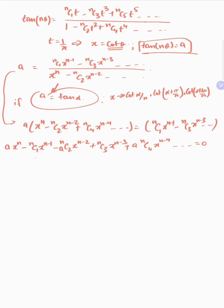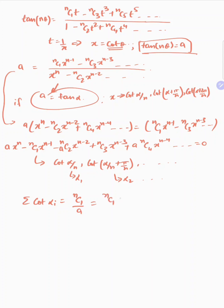Now, from the theory of equations, if this equation has roots cot(α/n), cot(α/n + π/n), and so on — calling them α₁, α₂, etc. — then sigma cot(αᵢ), the sum of all roots, equals minus b/a, which gives minus of (minus nC1) over A, that is nC1/tan α, or nC1·cot α. So sigma cot(αᵢ) = n·cot α.